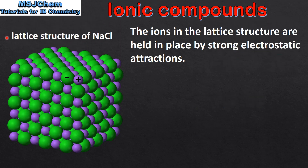In the previous video we saw that ionic compounds have a lattice structure. Here we can see the lattice structure of sodium chloride. The ions in the lattice structure are held in place by strong electrostatic attractions — for example, the positive sodium ion and the negative chloride ion.